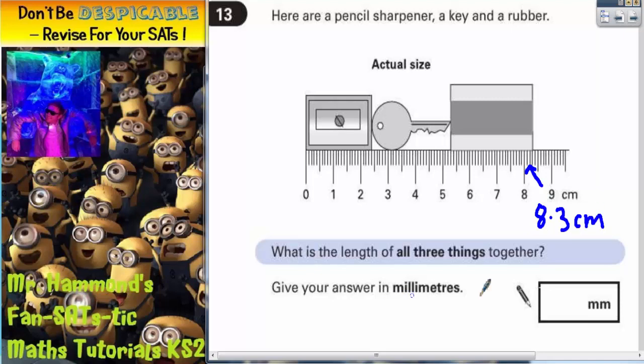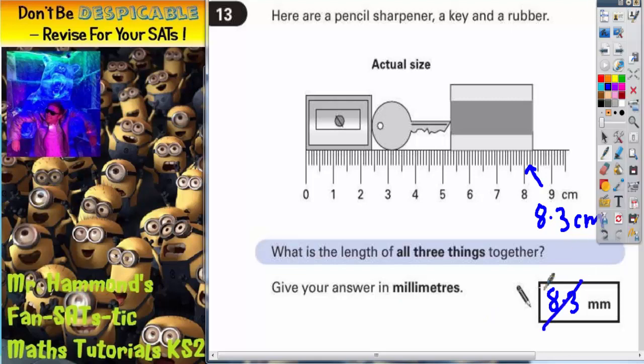But it does say give our answer in millimeters. So if we put 8.3 in there, that is going to be incorrect, because that's the answer in centimeters, and it wants to know the answer in millimeters. So the question we need to think about is how many millimeters is this? Well, remember, every one centimeter is worth 10 millimeters.